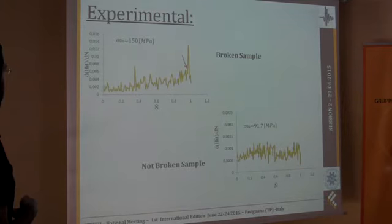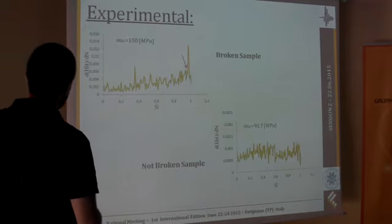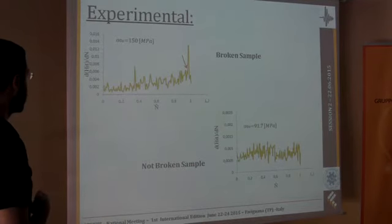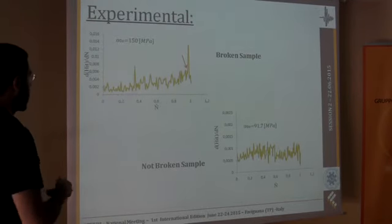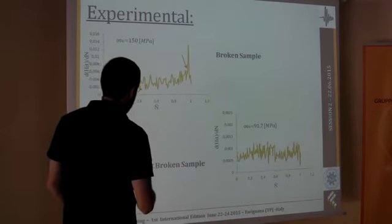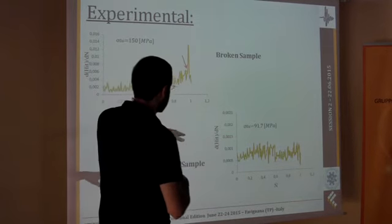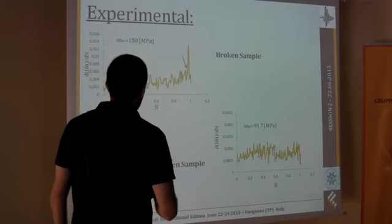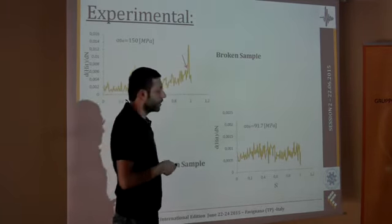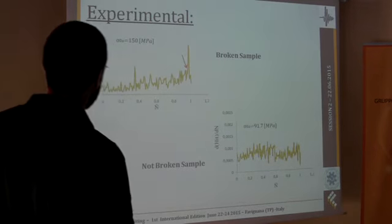And finally, just a comparison of what is observed in terms of the derivative of the number of hits as a function of the normalized number of cycles in broken sample and not broken sample. If the sample does not break, its derivative is almost stable. It is like some noise. While we observe a peak, a huge peak just before the breaking of the sample, for all the cases where the sample was broken.